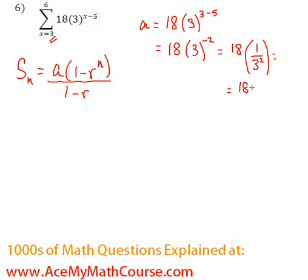3 squared is 9, so 18 times 1 over 9 is just 2. Because 18 divided by 9 is 2. Great, so that is the first term.